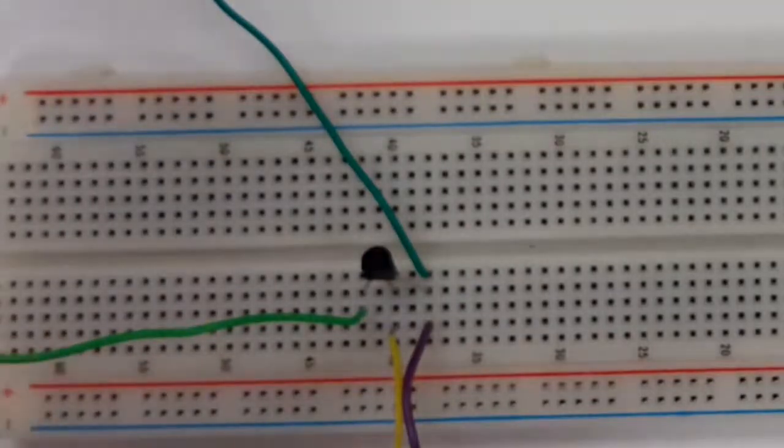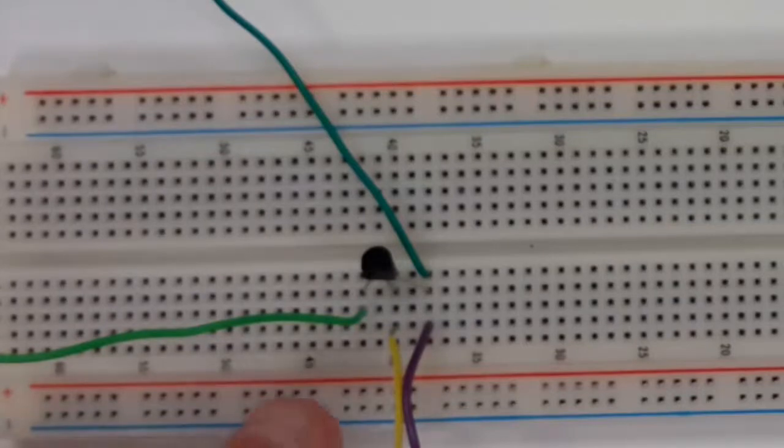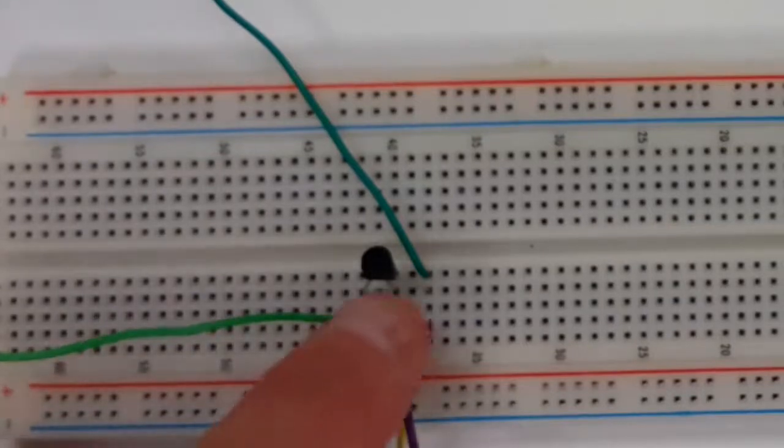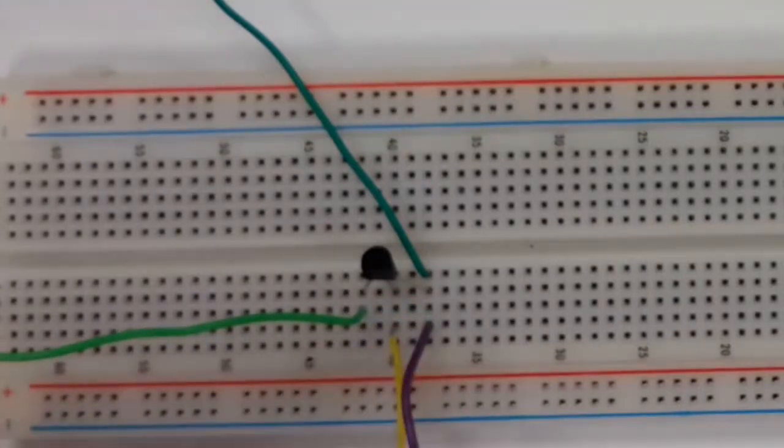I've spread the pins out a little bit so it's easier to connect everything up. I have my output signal coming from the center pin, and then I have another ground connection here that goes to my meter.